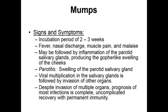Viral multiplication of this pathogen within the salivary glands is going to be followed by invasion of other organs. After this pathogen establishes itself in the parotid gland, it will then spread to other organs of the body. Despite the fact that it can invade multiple organs, generally speaking, the prognosis of most infections is complete, uncomplicated recovery with permanent immunity.